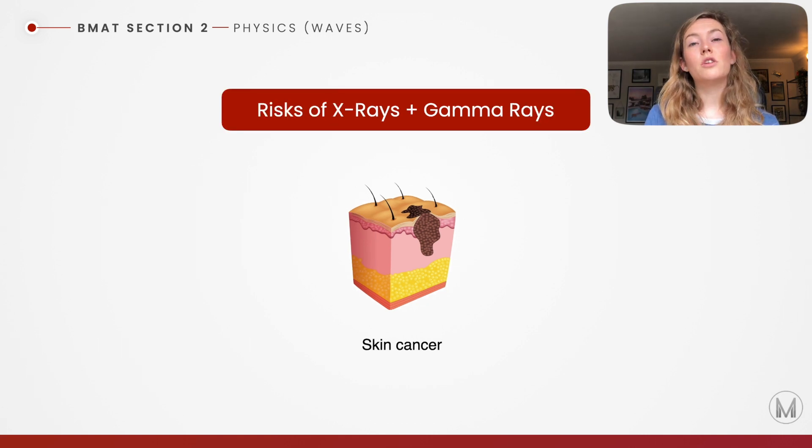Then we come to x-rays and gamma rays. These can also be very hazardous. They can increase your risk of skin cancer because they can mutate some of the skin cells and cause them to divide uncontrollably. We need to reduce our exposure to x-rays, for example, and of course gamma rays. This is also why when you go for an x-ray, the nurses and doctors wear protective clothing to reduce their exposure.